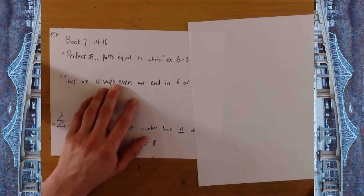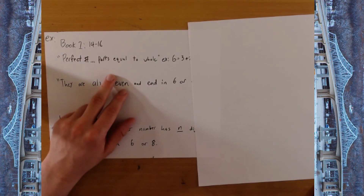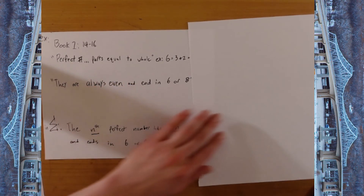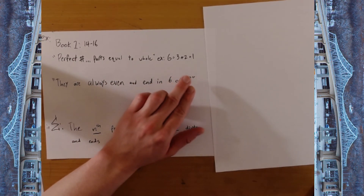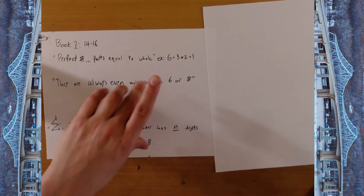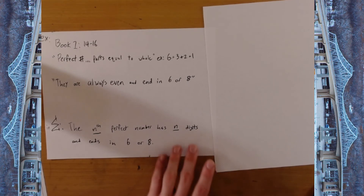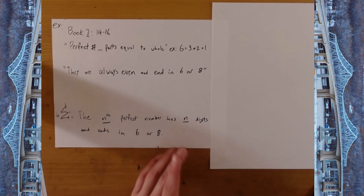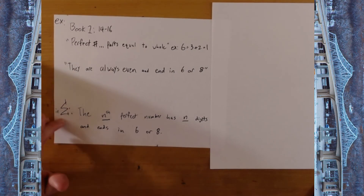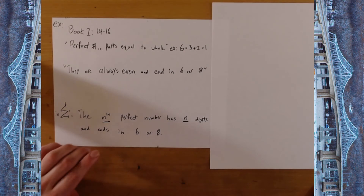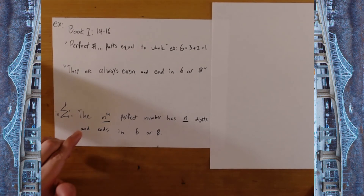In his book, Nicomachus states that perfect numbers have parts equal to the whole. So, for example, 6 equals 3 times 2 times 1, as well as 3 plus 2 plus 1. He also states that they are always even and end in 6 or 8. Both of these are true statements — they're both correct about what perfect numbers are. He just makes an incorrect assumption about the nature of them.